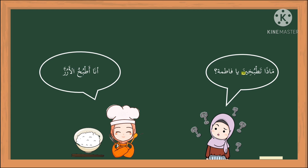Ya dan Nun di sini merujuk kepada perempuan. Ta — 'awak.' Mada tatbukhina ya Fatima? Apa yang awak sedang masak wahai Fatima? Ta — dhamir muttasil lil fi'li li-anti. Untuk perempuan kita akan menggunakan Ta di depan dan tambah Ya Nun di belakang. Dhamir Alif — sama seperti lelaki tadi — Atbuku, dhamir Ana, merujuk kepada saya. Untuk lelaki atau perempuan bila nak cakap 'saya,' sama sahaja, tetap menggunakan Alif di hadapan.